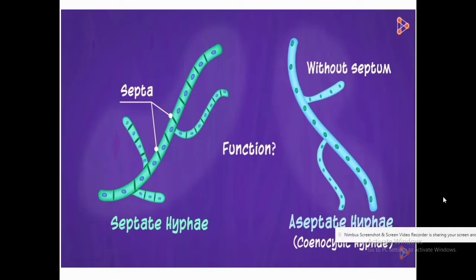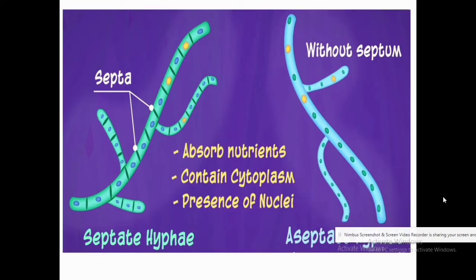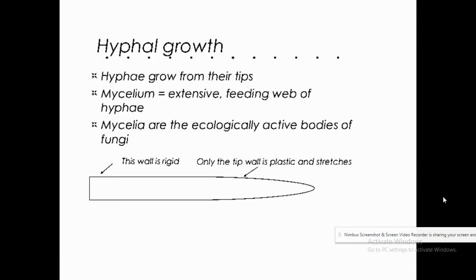The hyphae help in the absorption of nutrients. They contain cytoplasm and nuclei, which also assist in reproduction. The cytoplasm forms the volume of the cell. Hyphae grow from their tips.